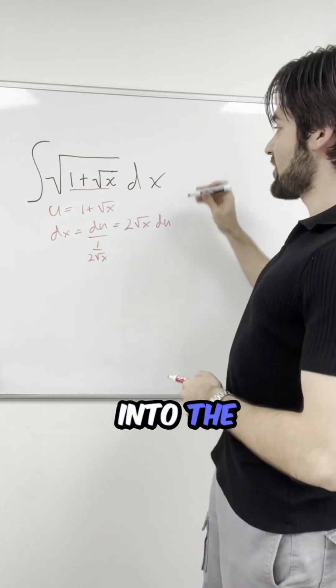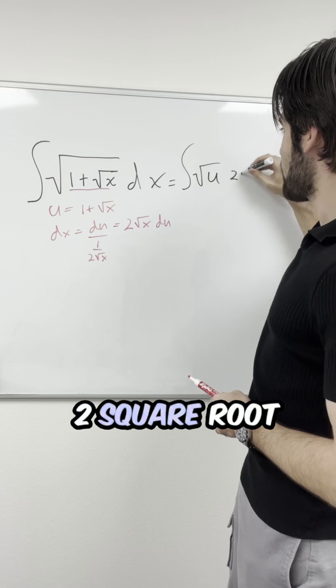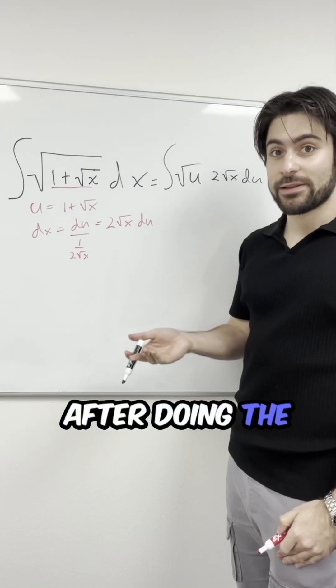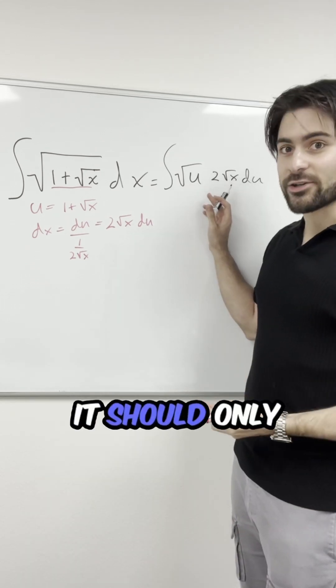Now when I make the substitution into the expression, I get the following: square root of u times 2 square root of x du. Now unfortunately, after doing the substitution, I still have x inside of the integrand when it should only be in terms of u.